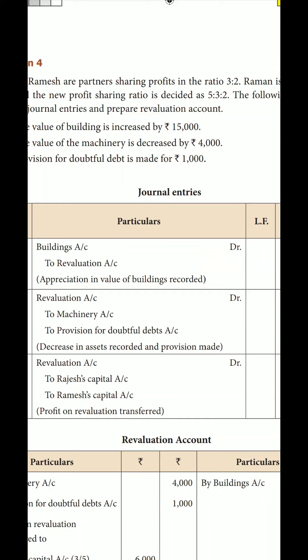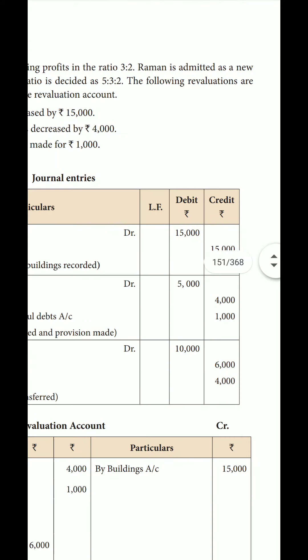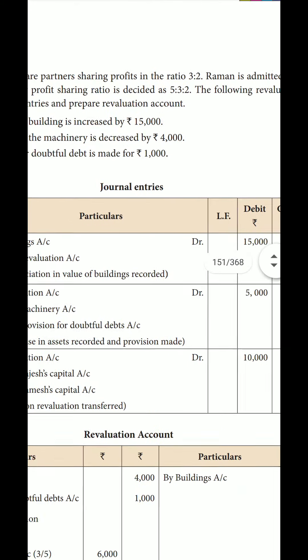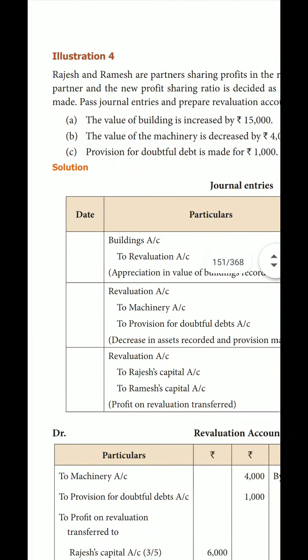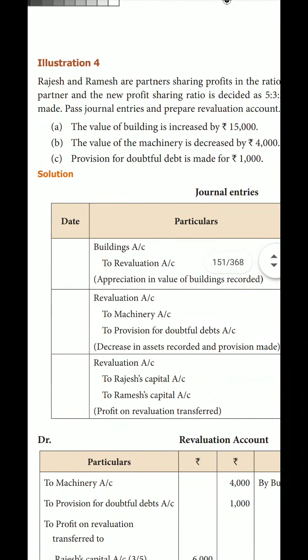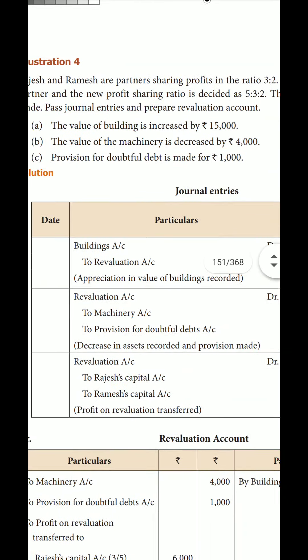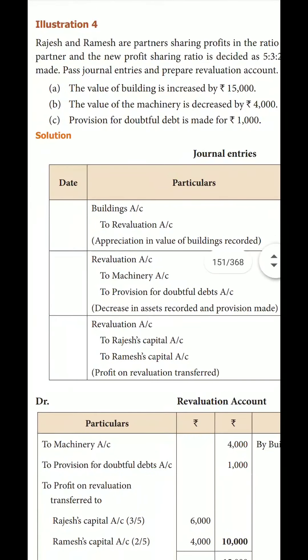In the future, we will share profits in the new ratio. The following revaluations are made. We need to pass journal entries and prepare the Revaluation Account. The journal entries and Revaluation Account ledger — that is what we need to complete.